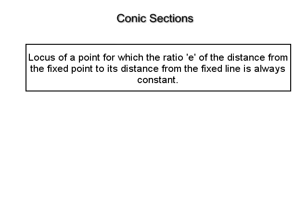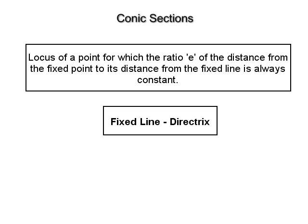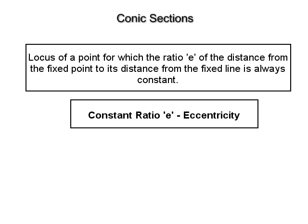Definition of a conic: A conic is defined as the locus of a point for which the ratio e of its distance from the fixed point to its distance from the fixed line is always constant. The fixed point is called the focus, the fixed line is called the directrix, and the constant ratio e is known as the eccentricity of a conic.